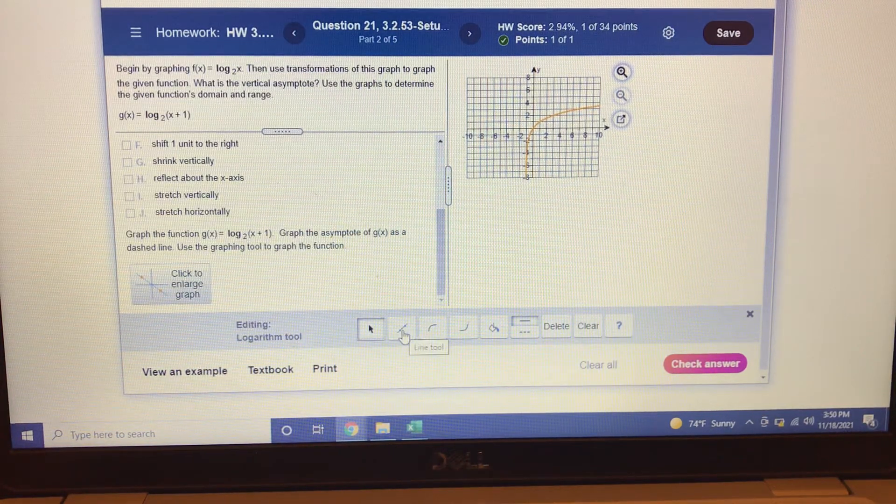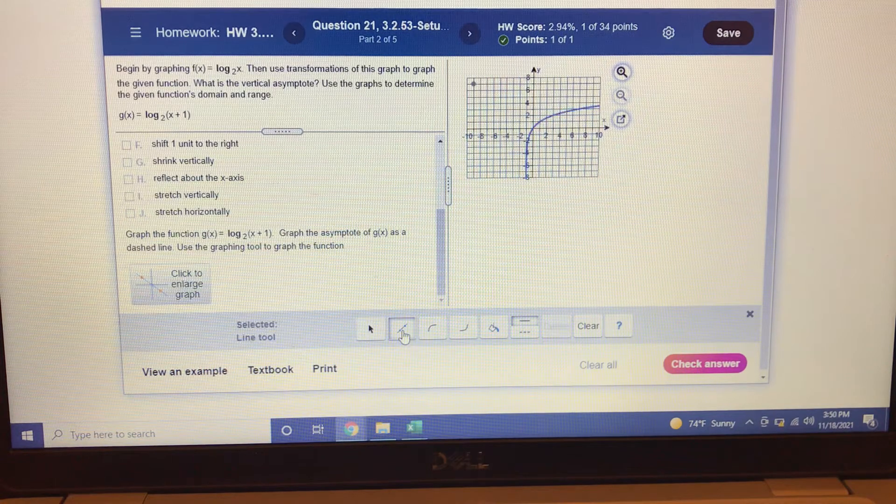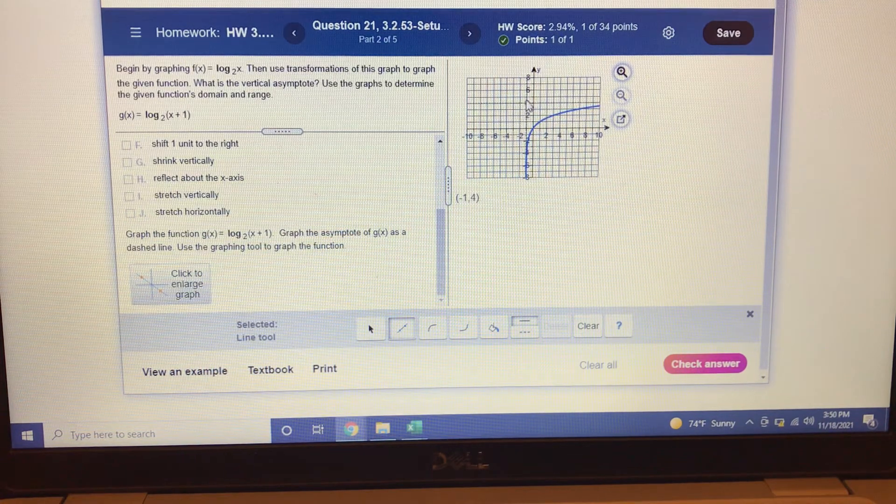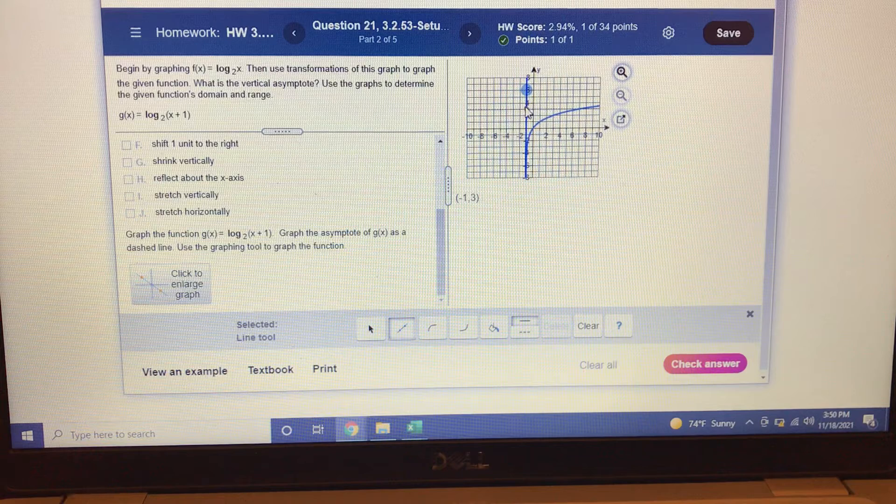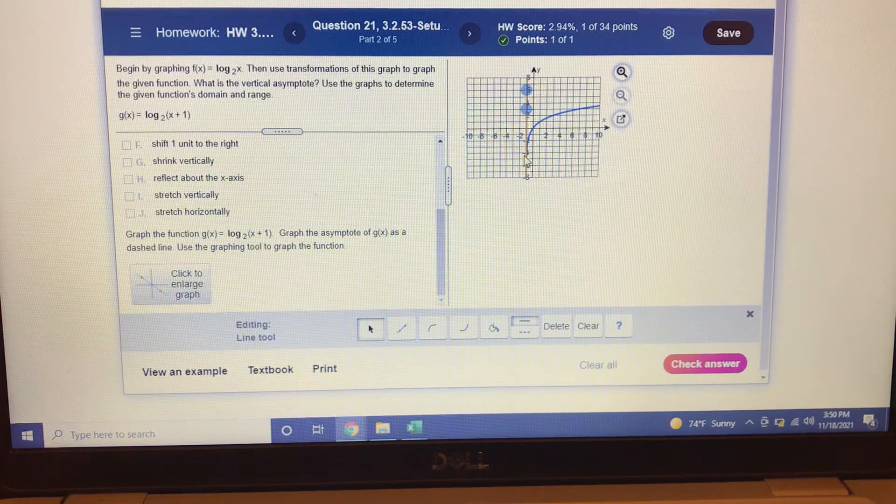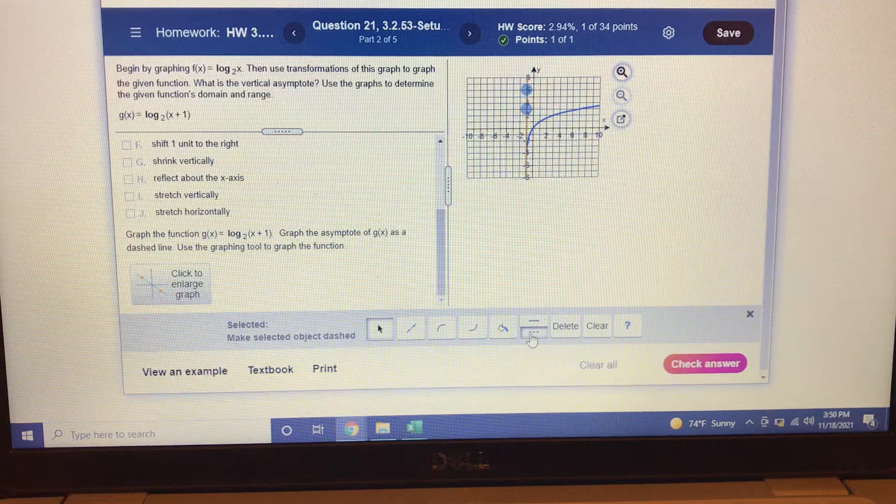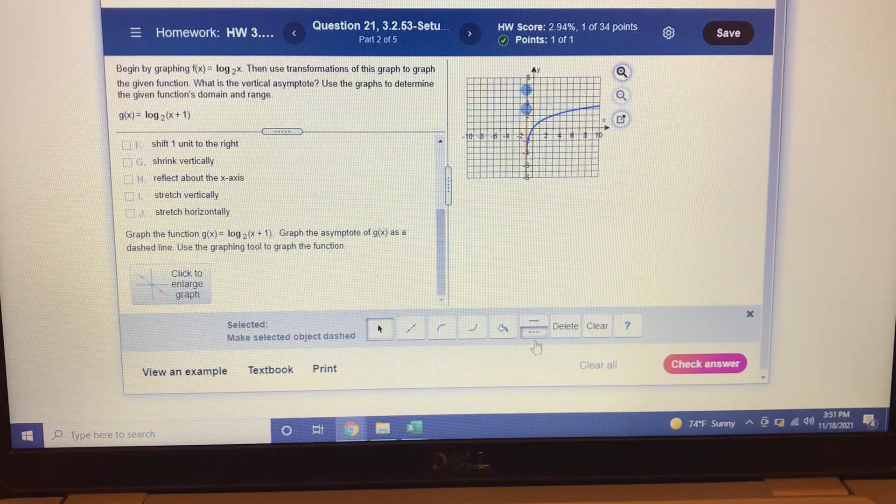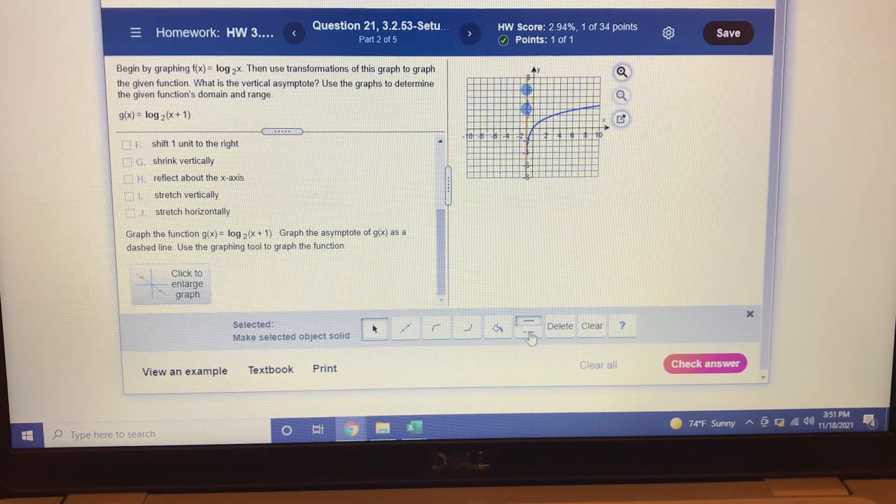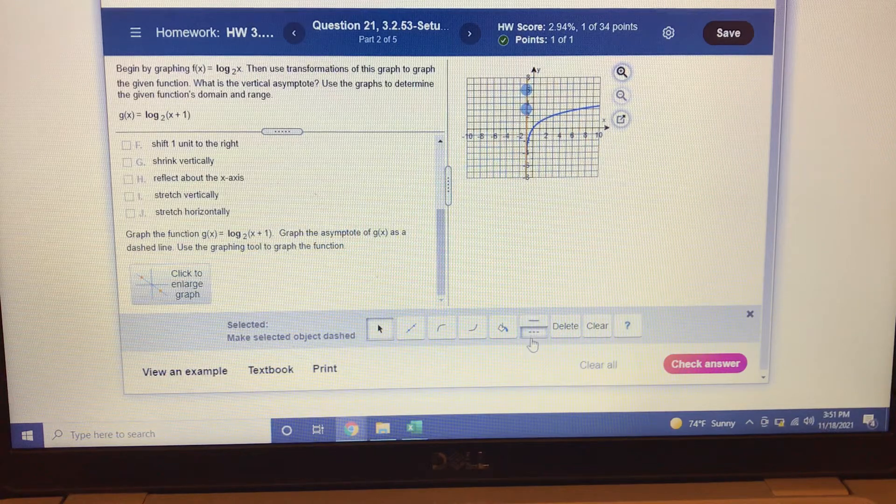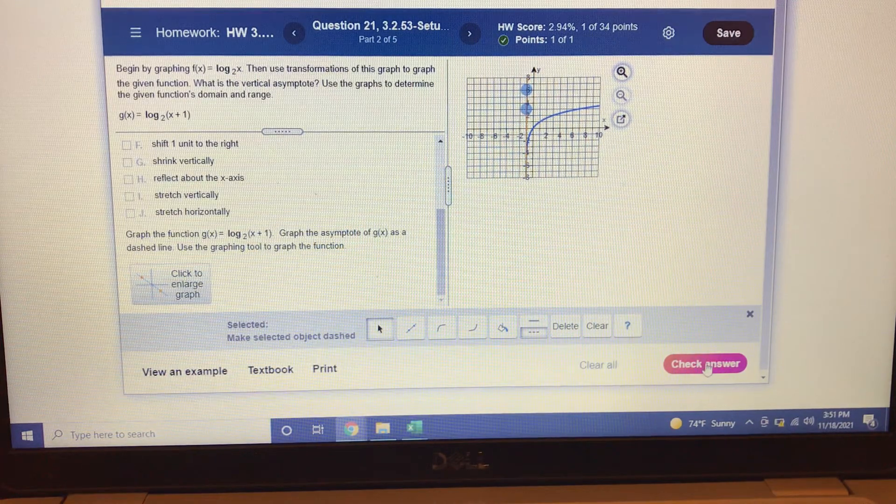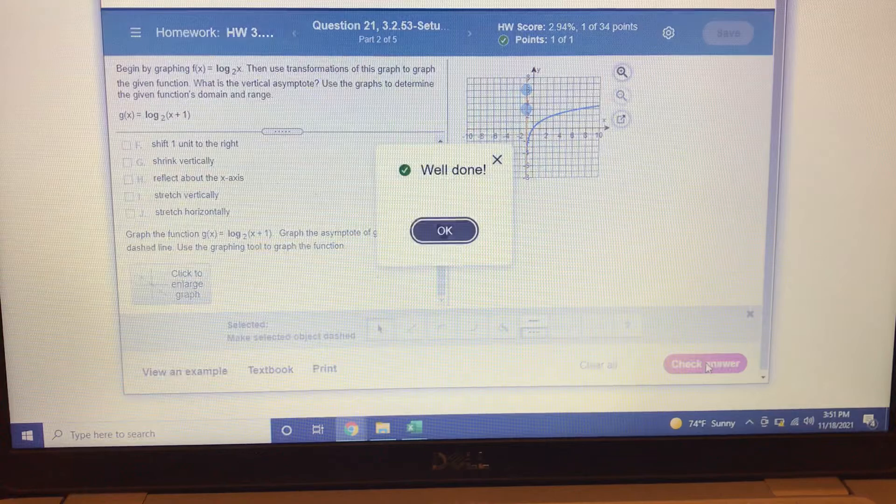So I need to grab my line. Line tool right here. And I'm going to graph a line right here. Now this line has to be a dashed line because it's an asymptote. So let me make sure. There's my dashed line. See my solid line, my dashed line. I had to hit it a few times. Let's check the answer. Well done.